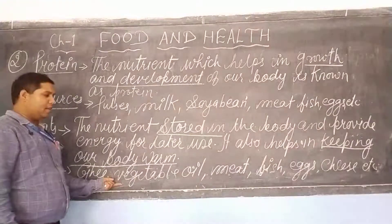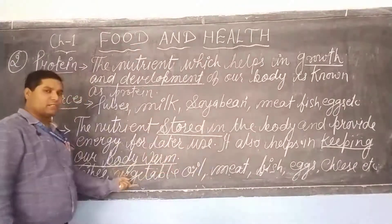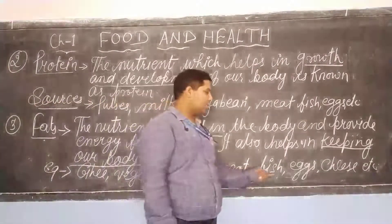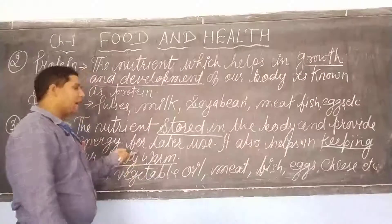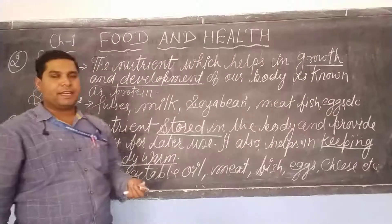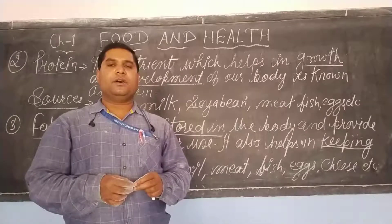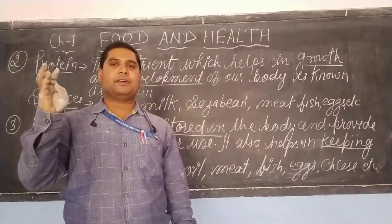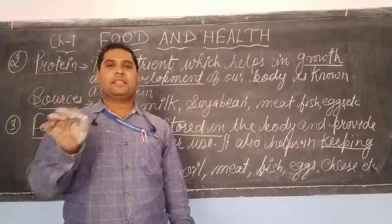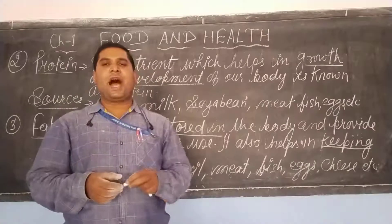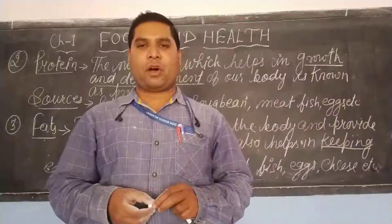Sources of fat include ghee, vegetable oils like mustard oil, sunflower oil, and fortune oil. These are the sources which provide fat in our body. Dear student, in this video you have read about the function of carbohydrate, protein, and fats, and learned about the sources from which we get these nutrients. I will explain the remaining nutrients in the next video. Thank you, dear student.